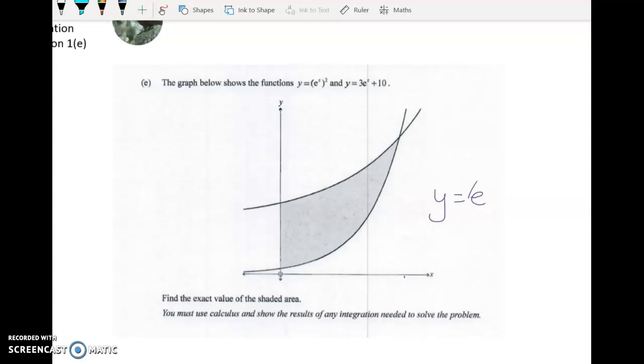So the first function is y equals e to the x squared, which we can rewrite as y equals e to the power of 2x. Now, from that, we know that the y-intercept is simply 1, because when x is 0, e to the 0 is 1.